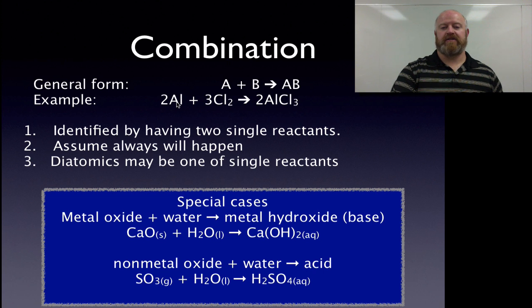An example we have for that is aluminum plus chlorine. Notice how chlorine here is a diatomic. A diatomic can be considered one of our single reactants. So as we take a look at these two, we see here is a single, here is a single thing, so they must make a compound. For a combination reaction, the key thing to look for is do I have two single reactants, and a single reactant means not a compound or just a single element. Diatomics are included in that.